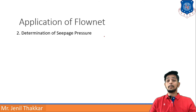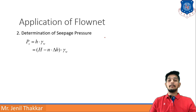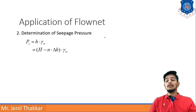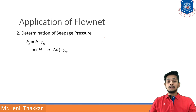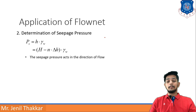The second application is determination of seepage pressure. Seepage pressure PS can be written as PS = (H − N·ΔH)·γw, where H is total head loss, N is the number of potential drops crossed, and γw is the unit weight of water. Seepage pressure always acts in the direction of flow.